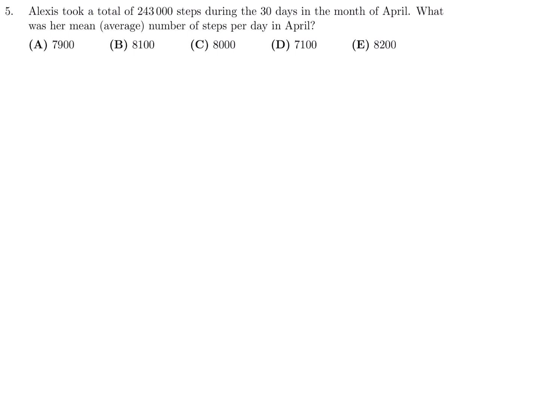Alexis took a total of 243,000 steps during the 30 days in the month of April. What was her mean number of steps per day in April? 243,000 divided by 30 would be how you calculate this mean. And when you do, that is 8100. So number 5, the answer is B.